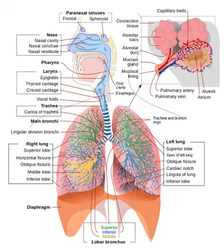Thus at sea level, where the ambient atmospheric pressure is about 100 kilopascals, the moistened air that flows into the lungs from the trachea consists of water vapor 6.3 kilopascals, nitrogen 74.0 kilopascals, oxygen 19.7 kilopascals, and trace amounts of carbon dioxide and other gases, a total of 100 kilopascals. In dry air the partial pressure of O2 at sea level is 21.0 kilopascals, i.e. 21% of 100 kilopascals, compared to the 19.7 kilopascals of oxygen entering the alveolar air — the tracheal partial pressure of oxygen is 21% of (100 kilopascals − 6.3 kilopascals) = 19.7 kilopascals.